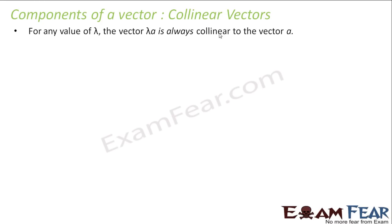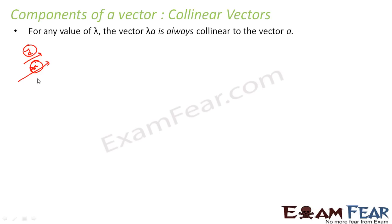λ·a is collinear to vector a. If I have some vector a, then λ·a just increases the magnitude while the direction stays the same, so both vectors are parallel. Whether lambda is greater than 1 or less, in all cases they are collinear — λ·a will always be collinear to a.